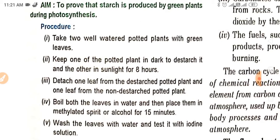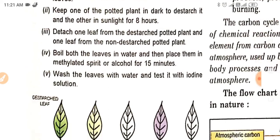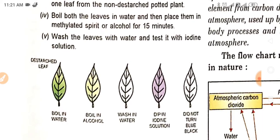Boil both the leaves in water and then place them in methylated spirit or alcohol for 15 minutes. Then wash the leaves with water and test them with iodine solution. We have to boil the destarched leaves with alcohol, then wash in water, then dip in iodine solution.